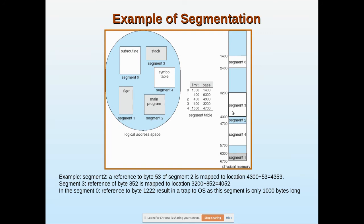In segment 0, a reference to byte 1222 results in a trap to the OS because the segment's length is only 1000. Since 1222 exceeds this limit, it generates an error. That's it.